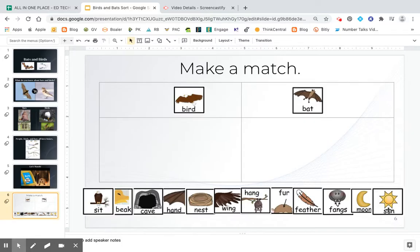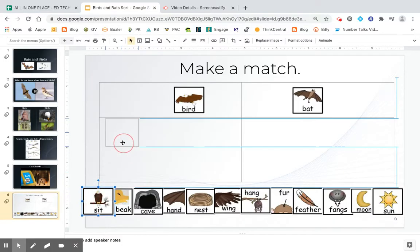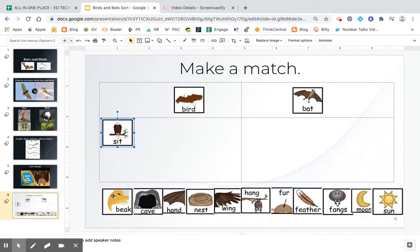And we're going to try to match the picture with the correct creature. So let's look at this picture here. This word is, read it with me, sit. Okay, so I'm looking to see which creature sits on a tree branch. Would it be a bird or a bat? Okay, tell me. What do you think, bird or bat? All right, I bet you're saying bird. A bird sits on a tree branch.